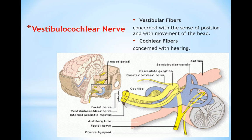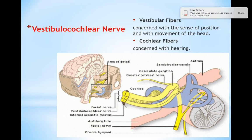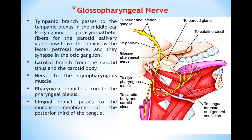The vestibulocochlear nerve is the eighth cranial nerve and consists of two types of fibers: the vestibular fibers, which are concerned with the sense of position and movement of the head, and the cochlear fibers, which are concerned with the hearing sense. The vestibulocochlear nerve leaves the cranial cavity and enters the internal acoustic meatus alongside the facial nerve, and terminates within the bony structures of the skull.